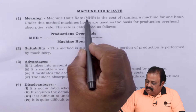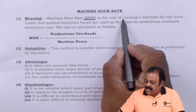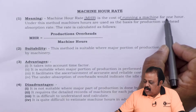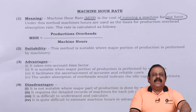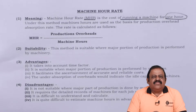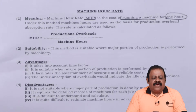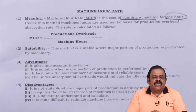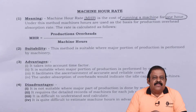Machine hour rate is the cost of running a machine for one hour. It means when you are using a machinery within a period of one hour, how much cost gets incurred. For example, if machinery is used for one hour, there will be some amount of depreciation — that depreciation becomes the cost of running that machinery for that particular hour. Machinery also requires electricity, so how much electricity is consumed during that one hour is also considered.